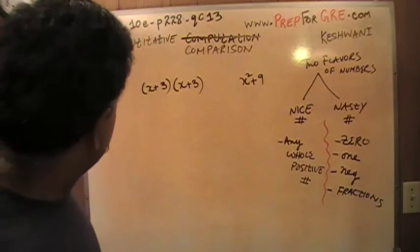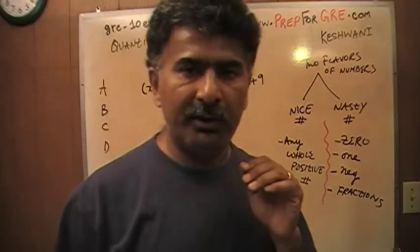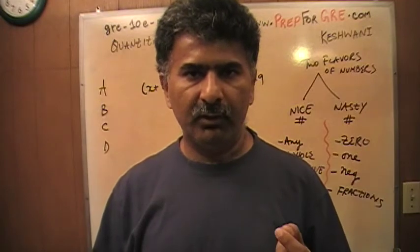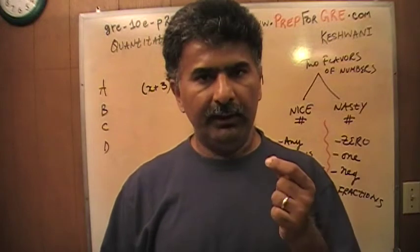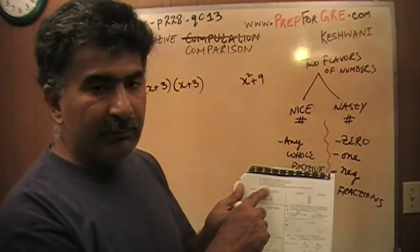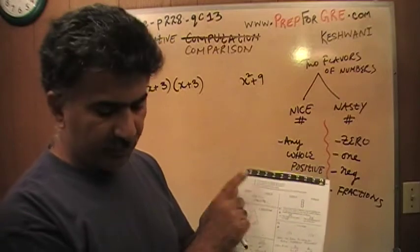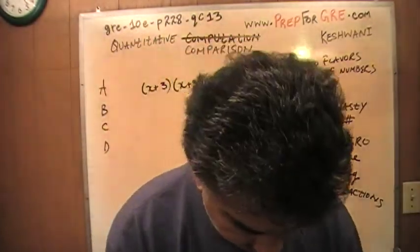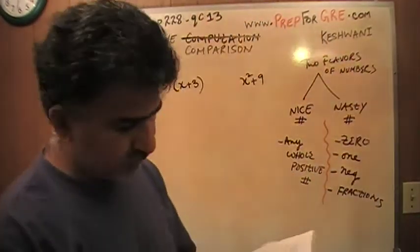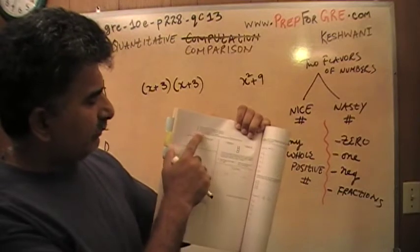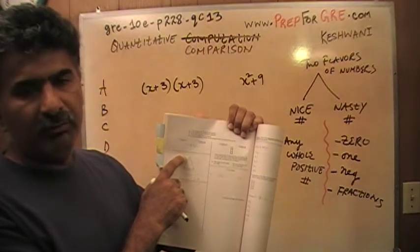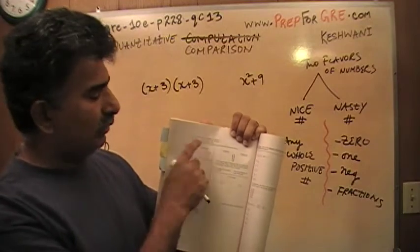If you pick A for the answer choice, you're claiming that the quantity in column A is always bigger — not just for the numbers you've picked, but always bigger. If you pick B, you're claiming column B is always bigger. If you pick C, you're claiming the two quantities are always equal. Even though on page 228 they leave out the word 'always,' that is exactly what they mean — they should insert the word 'always' in capital letters, but unfortunately they do not.